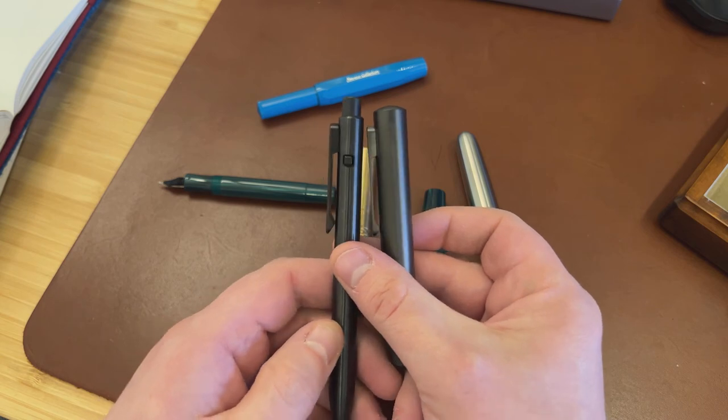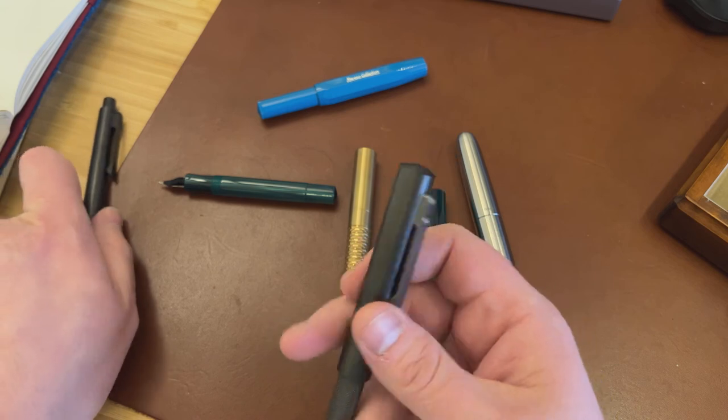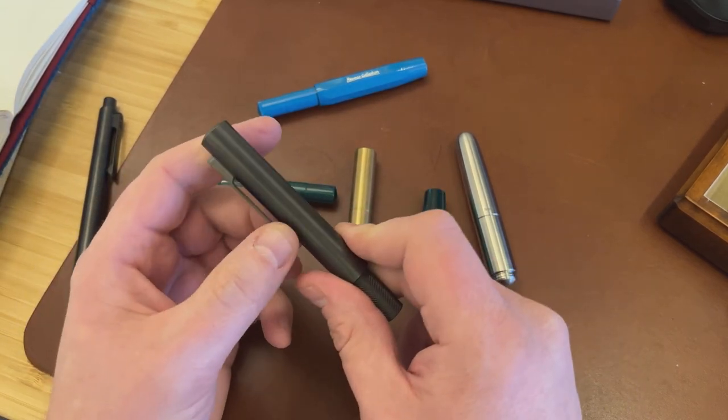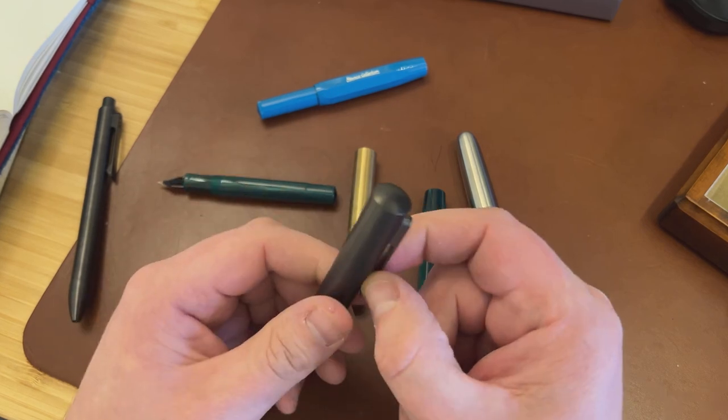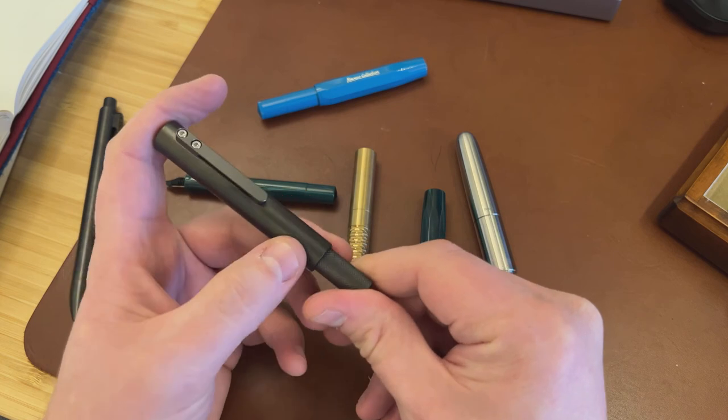which reminds me of the kinds of clips you get on the tactile turn side click here. So two screws, a fully machined standout clip. It is tough. It's a very functional roll stop and appears to be a very functional clip, although I don't tend to clip my pens. This is titanium in a really dark grey finish. I think it's extremely handsome.